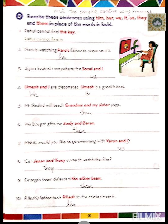Number seven: Mohit, would you like to go swimming with me? With Varun and I? Since Varun and I are together, we use 'us.' Sentence: Mohit, would you like to go swimming with us? Number eight: Can Jason and Tracy come to watch the film? For Jason and Tracy we use 'they.' Sentence: Can they come to watch the film?